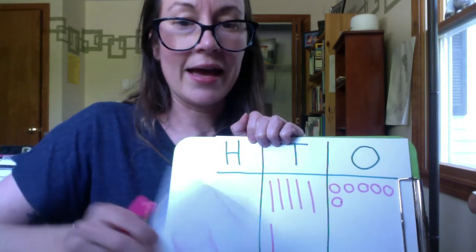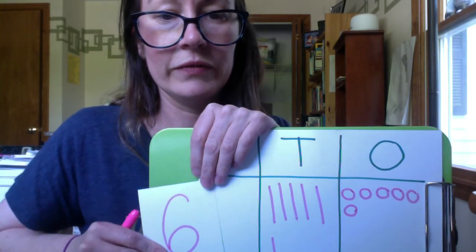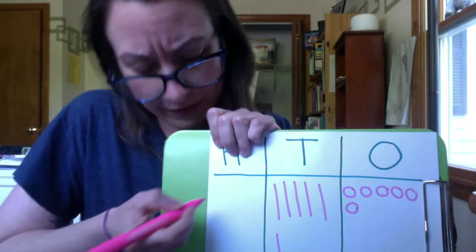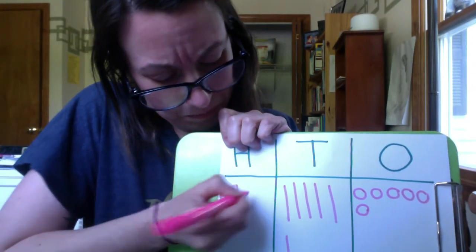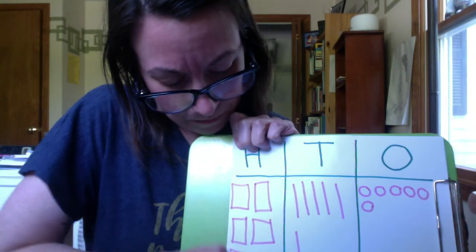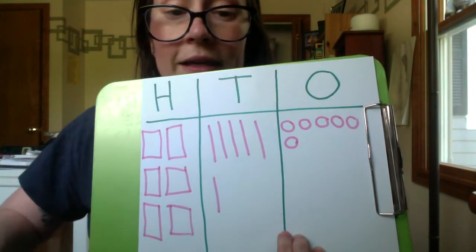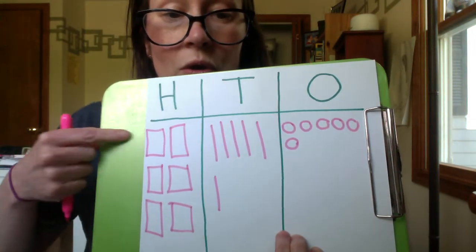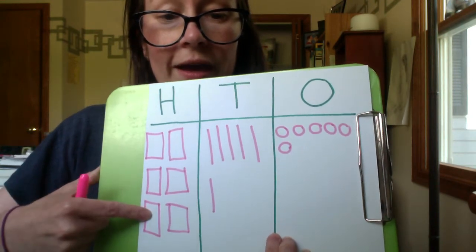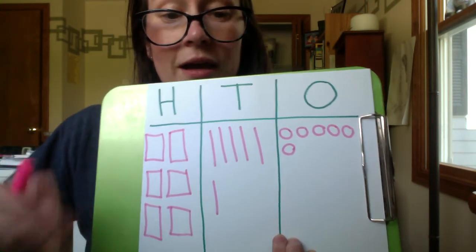Now if I have six hundreds — it's a little difficult to see — there we go. If I have six hundreds, I draw big squares for hundreds. Let's make sure I drew six hundreds: one, two, three, four, five, six. Six squares in the hundreds makes six hundreds.